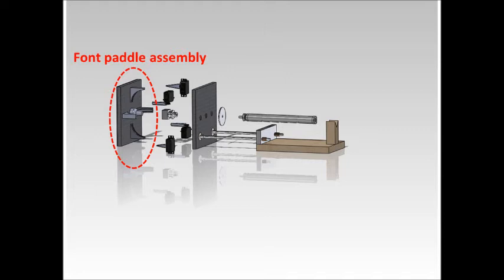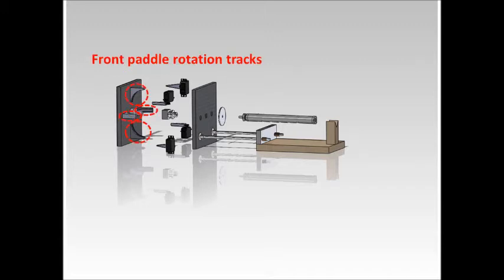In the front paddle assembly, we have a ball joint that allows us the proper degrees of freedom. We have front paddle rotation tracks to allow us to hit the ball at higher angles and to keep the paddle from rotating.